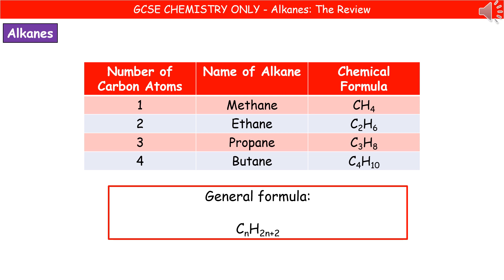Alkanes are in a homologous series because they share the same general formula, which you need to know in order to work out the chemical formula of any alkane. The general formula is CₙH₂ₙ₊₂. So if they tell you an alkane has four carbon atoms, you do C₄ and then 2 × 4 = 8, plus 2 = 10, giving H₁₀ — so C₄H₁₀. You can work out any alkane if you know that general formula.